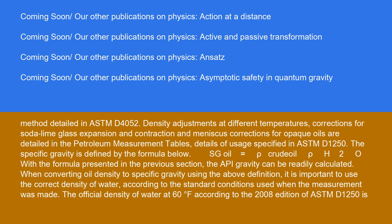SG oil equals ρ crude oil/ρ H2O. With the formula presented in the previous section, the API gravity can be readily calculated. When converting oil density to specific gravity using the above definition, it is important to use the correct density of water according to the standard conditions used when the measurement was made.